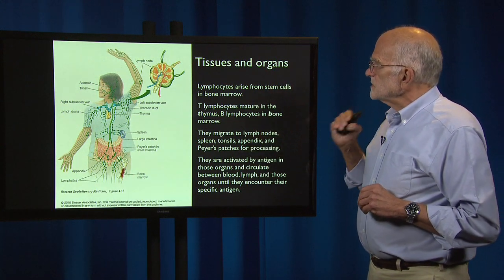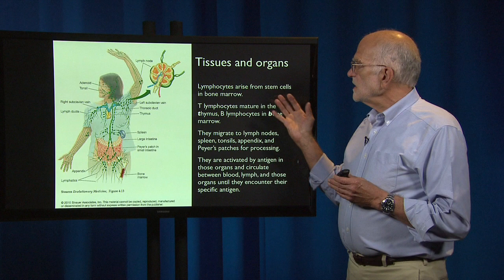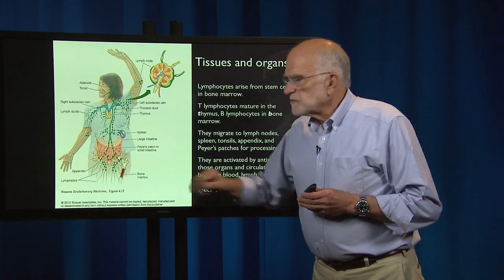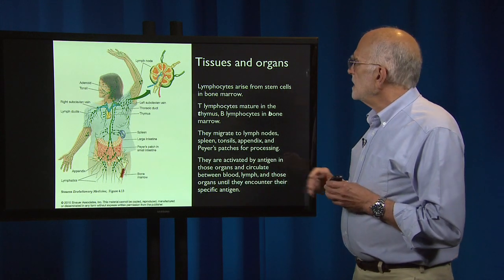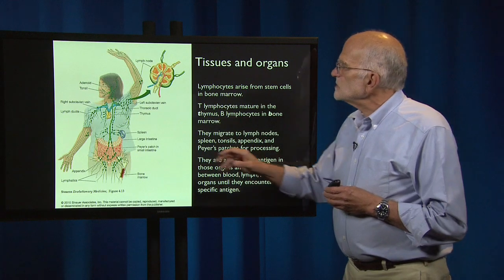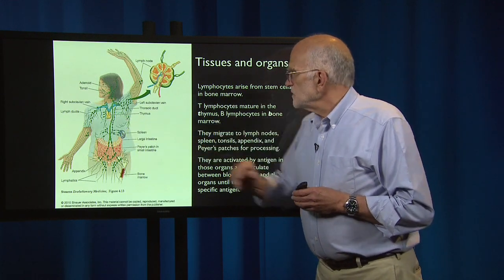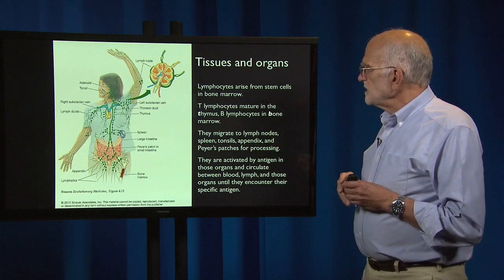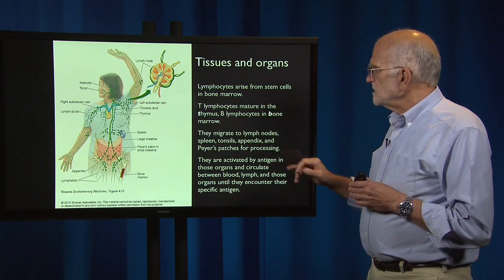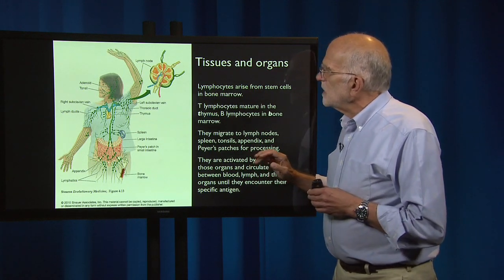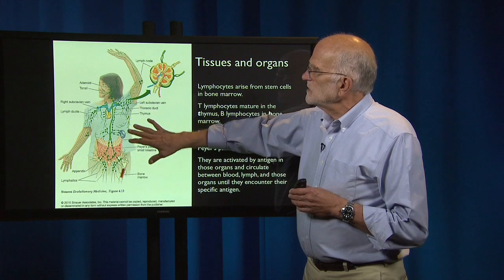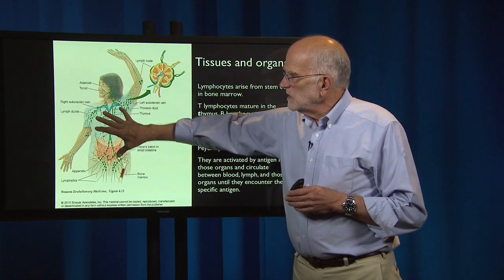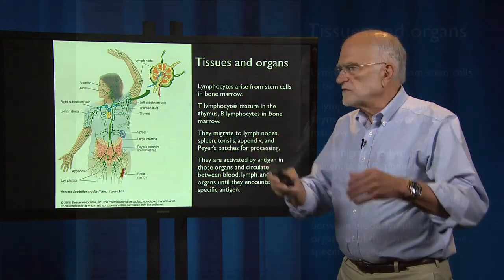In terms of tissues and organs, lymphocytes arise from stem cells in bone marrow — much of that produced in the large bones of the leg and hip. T lymphocytes mature in the thymus, at the base of the throat, and B lymphocytes mature in bone marrow. They migrate to lymph nodes, spleen, tonsils, appendix, and Peyer's patches for processing. You should think of your immune system as being distributed all over the body, but having a particular network that is the focus of action.